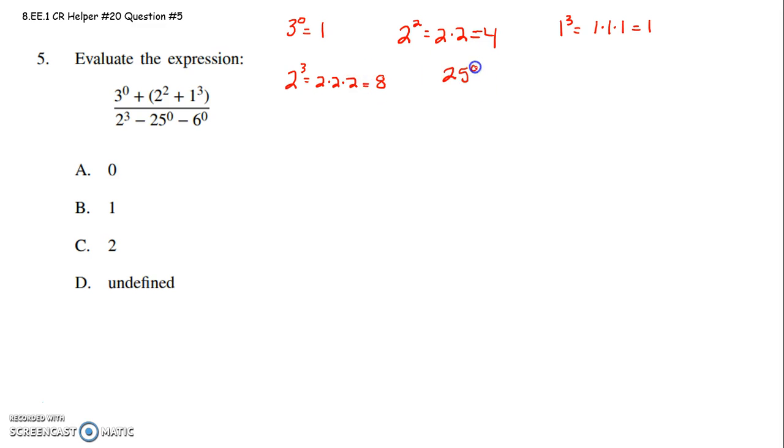25 to the 0 power, any number to the 0 power is 1. And 6 to the 0 power is 1, any number to the 0 power is 1. So now I'm going to take this expression 3 to the 0 plus 2 squared plus 1 to the 3rd in parentheses all over 2 to the 3rd minus 25 to the 0 minus 6 to the 0.